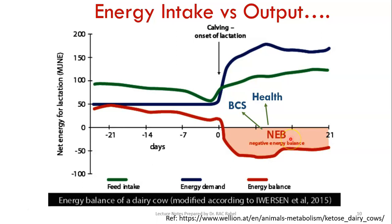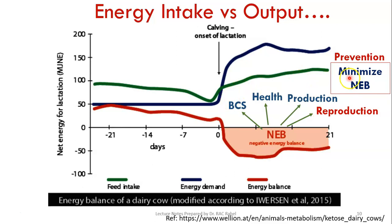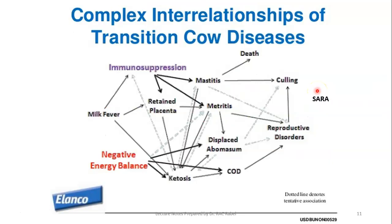That negative energy balance is reflected in loss of body condition score. If not controlled properly, it can affect health, production levels, and reproduction, causing infertility. We can't prevent loss of body condition entirely, but we can minimize the negative energy balance, and by doing so minimize the adverse effects on health and reproductive parameters.